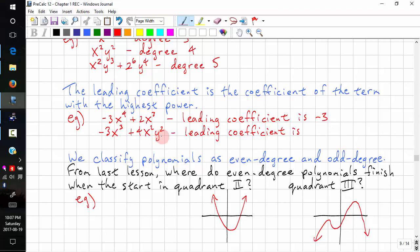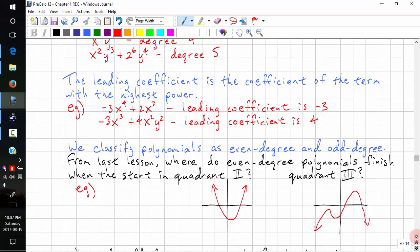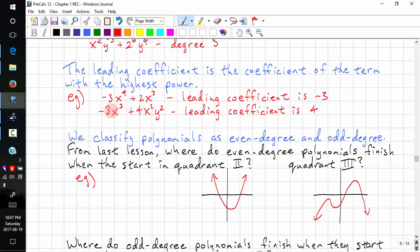Here we have power 3. Here we have power 4. So this is our leading coefficient, 4. So be careful of polynomials that aren't ordered from highest to lowest.